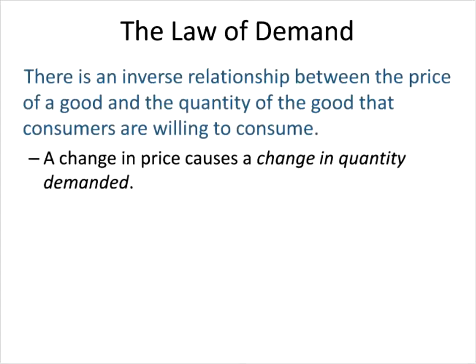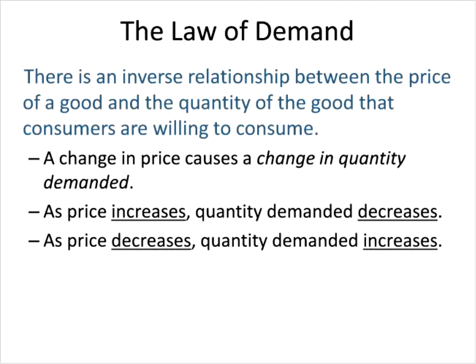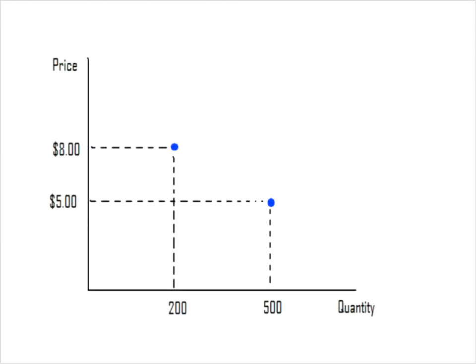Any change in price causes a change in quantity demanded, which is an important point because we have to get our terminology correct. As price increases, the quantity demanded decreases. As price decreases, the quantity demanded increases. Economics is often the formalization of common sense, and we can see that more tickets were bought at a lower price than at the higher price, fulfilling the law of demand.